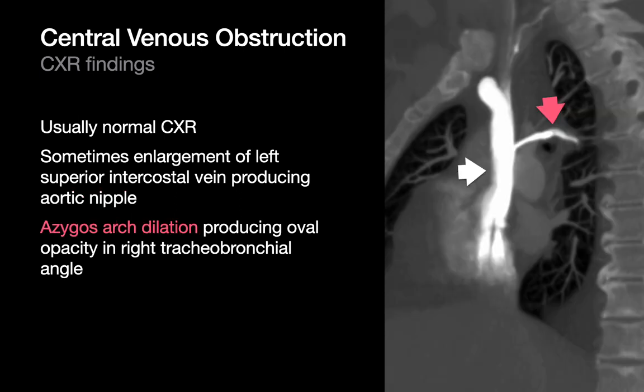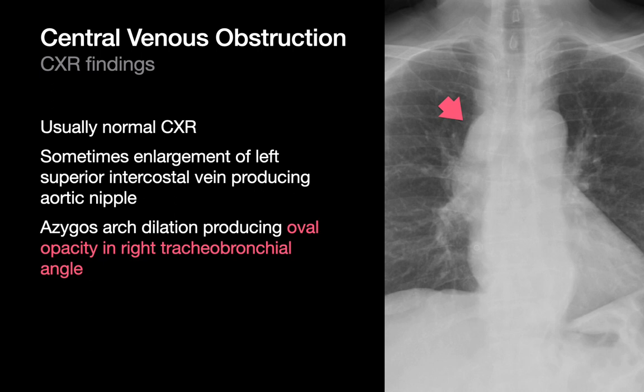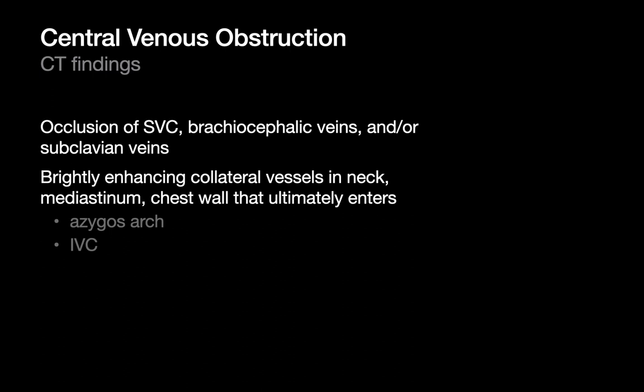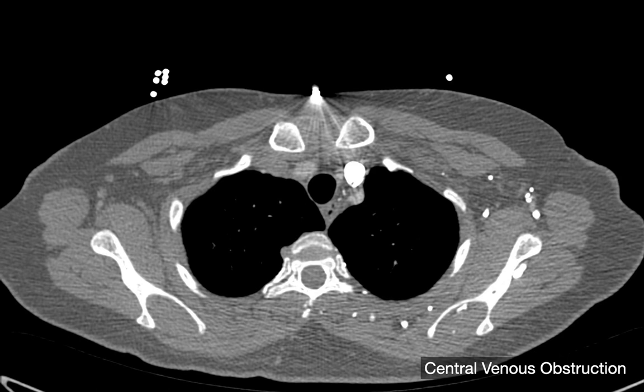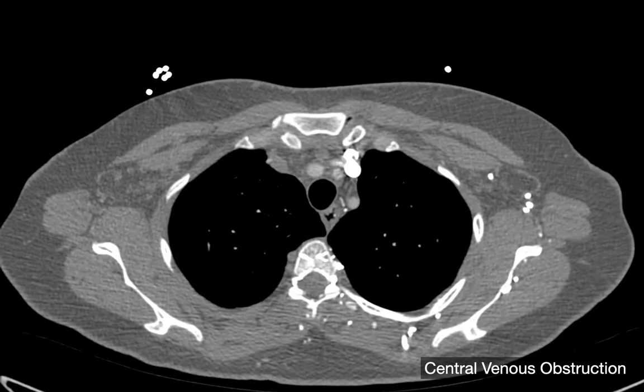With central venous obstruction, sometimes the azygos vein can be dilated too. I have a white arrow pointing at the SVC and a pink arrow pointing at the azygos. When it becomes dilated, you can see a large oval opacity in the right tracheobronchial angle, immediately above where the right main stem bronchus takes off from the trachea. On CT imaging, not only are occluded central veins often directly observable, but enlarged venous collaterals may be too. If you've injected intravenous contrast, these collaterals will be filled with brightly enhancing contrast, as on this example showing brightly enhancing contrast in many collateral veins in the chest wall.